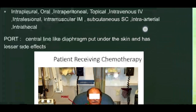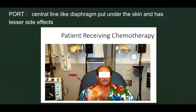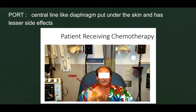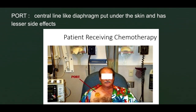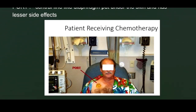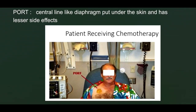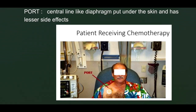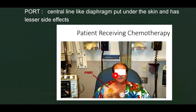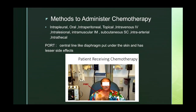This picture shows what is called a port-a-cath — a specific central line with a diaphragm placed under the skin that has fewer side effects during drug infusion. This patient has a port-a-cath in the right upper part of the shoulder, used for administration of chemotherapy.